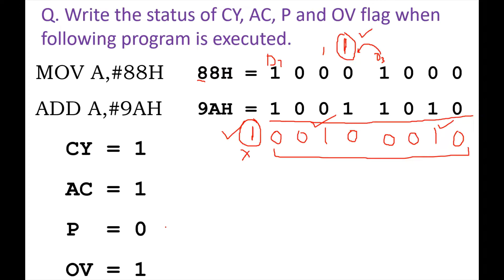And finally, the overflow flag is 1, because when you convert the numbers to decimal and perform addition, the result exceeds the range of signed numbers. That is why the overflow flag is 1. In this way, by executing these instructions, we can determine the status of the carry flag, auxiliary carry flag, parity flag, and overflow flag.